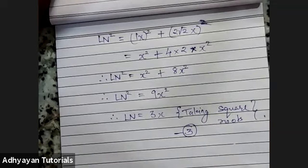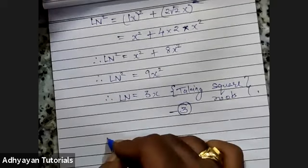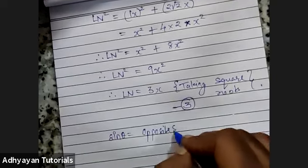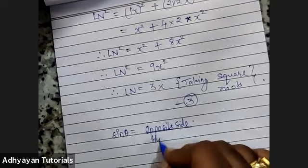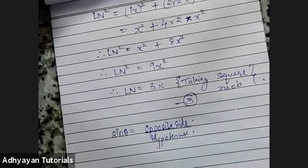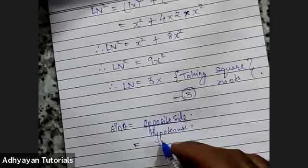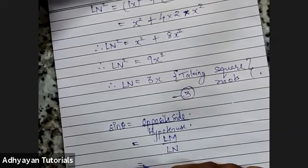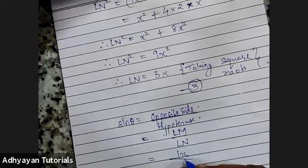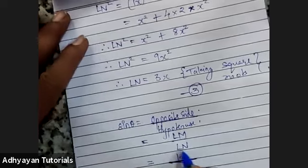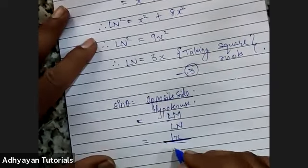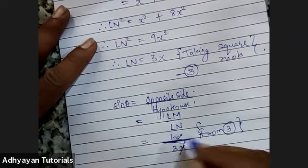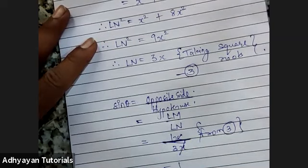Now since I know LN, can I find the other two terms? Yes. Sin θ = opposite side upon hypotenuse = LM upon LN = 1X upon 3X from equation 3. X, X gets cancelled. The answer is 1/3.